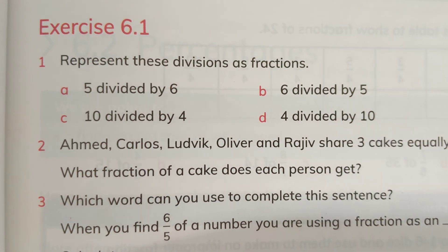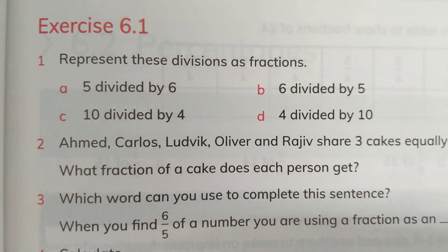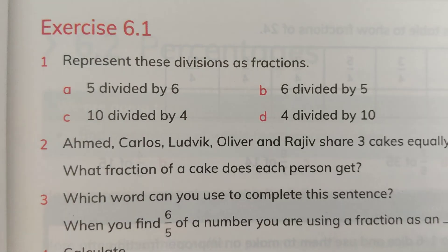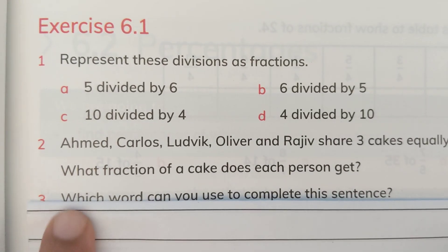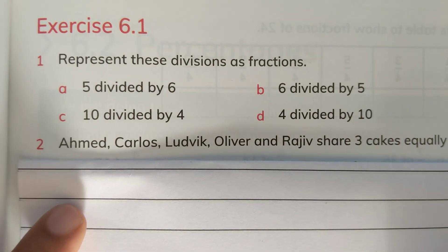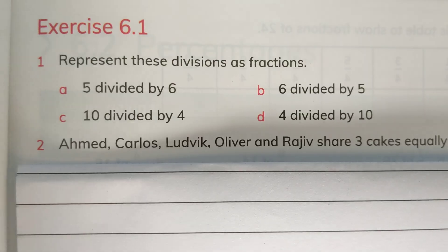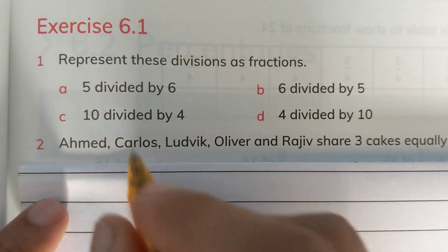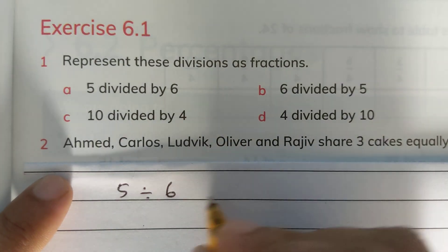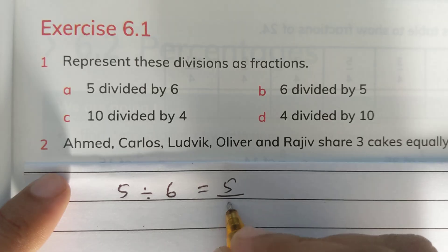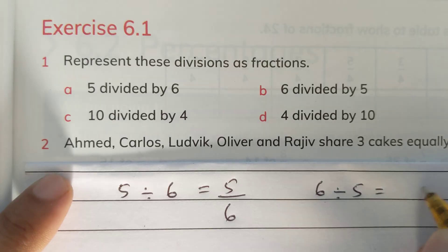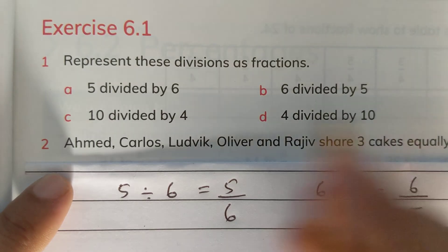In question number one, it says represent these divisions as fractions. We are provided with some statements and we have to convert these divisions as fractions. We know that division and fractions are interrelated — basically division is fraction and fractions are divisions. If 5 divided by 6 is given, it means 5 upon 6. And 6 divided by 5 equals 6 over 5.